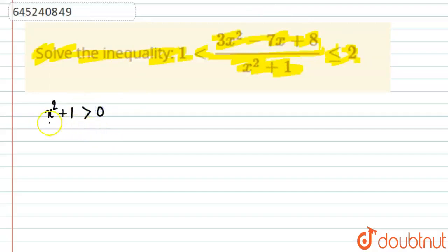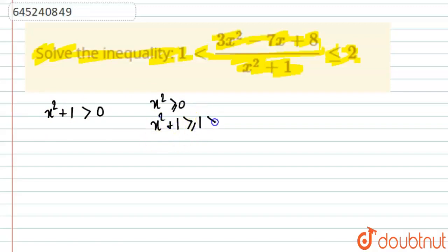Since x² is always greater than or equal to 0, adding 1 on both sides gives us x² + 1 ≥ 1, which is always greater than 0. Because this denominator is positive, we can multiply it throughout the inequality and the inequality signs will remain the same — that is a basic principle.